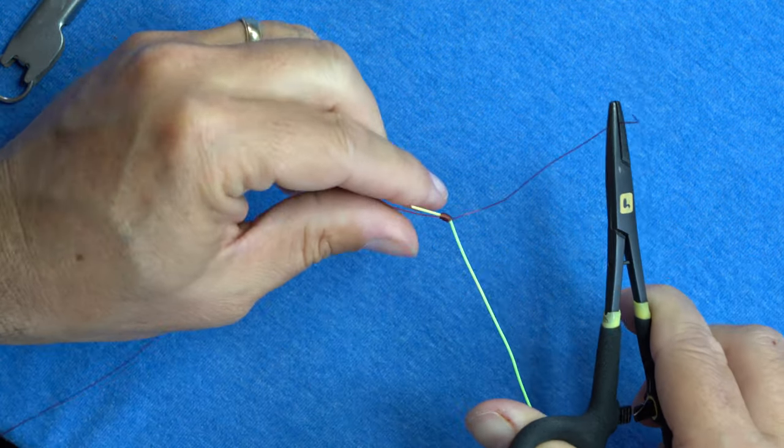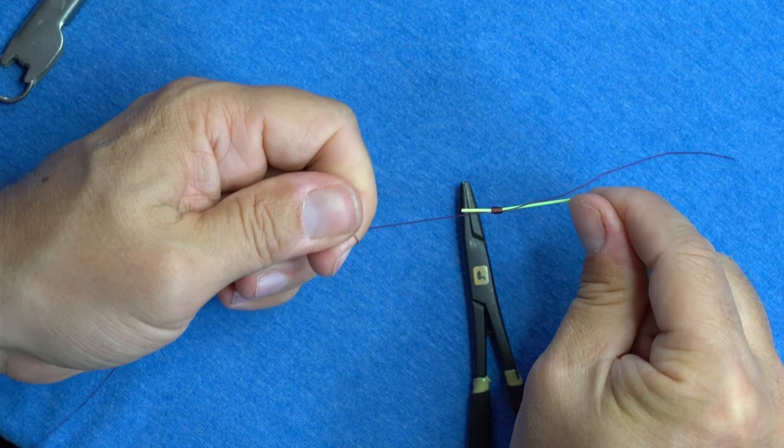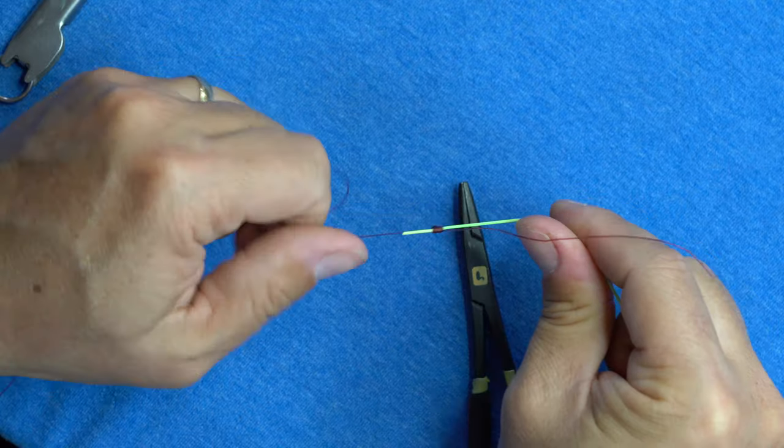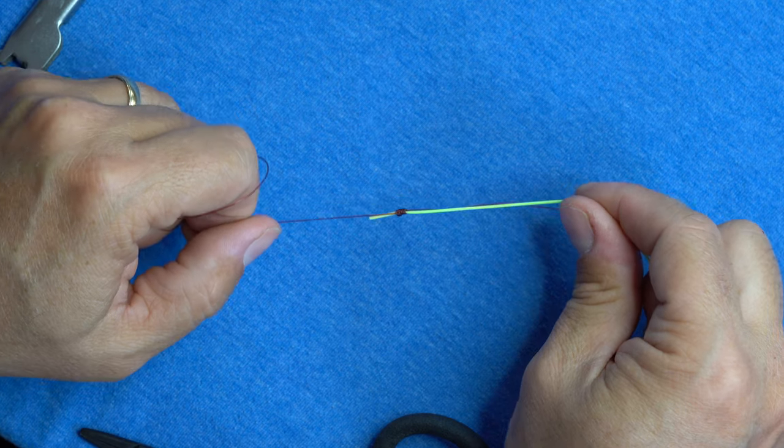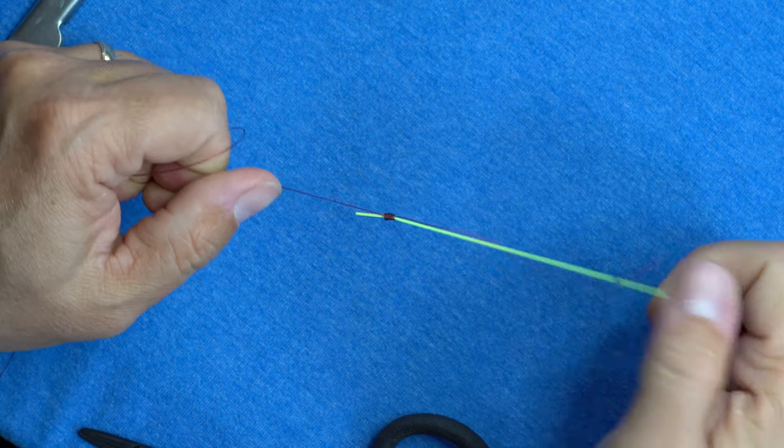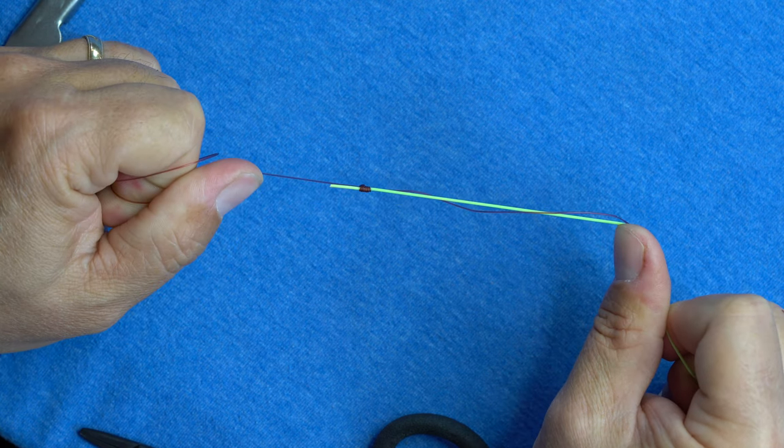Like so. And then our final point, which is the ultimate tightening one. Like so. So what we have now is a pretty tight, clean set of wraps going around my fly line.